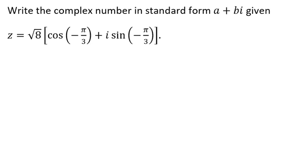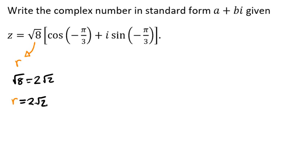What we're going to do first is look at our square root of 8. We know that's our r value, but we also know that it reduces. The square root of 8 becomes 2 radical 2, so we're going to say that r equals 2 radical 2.